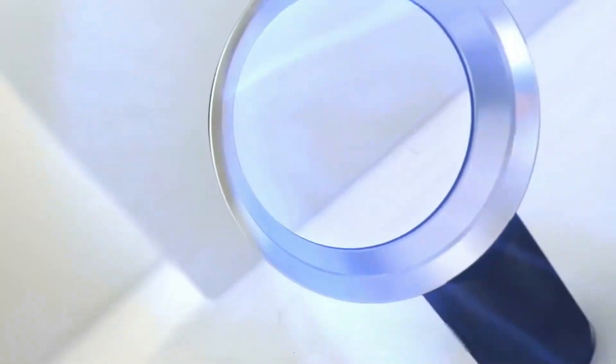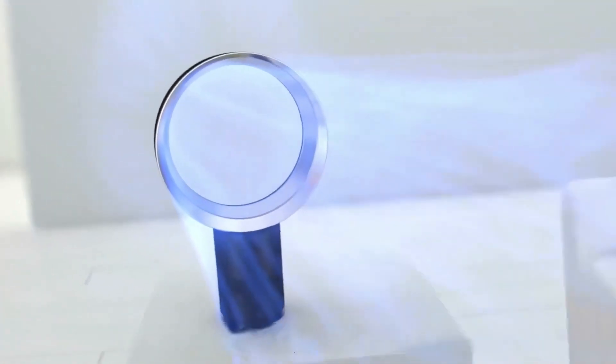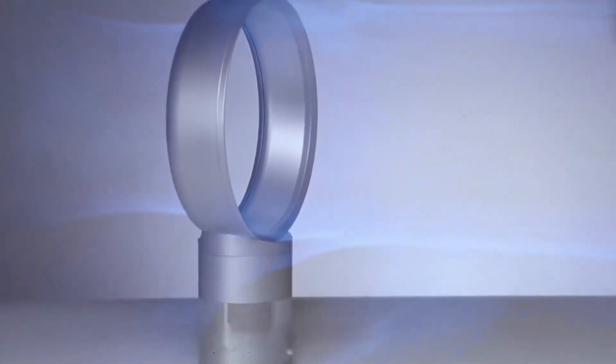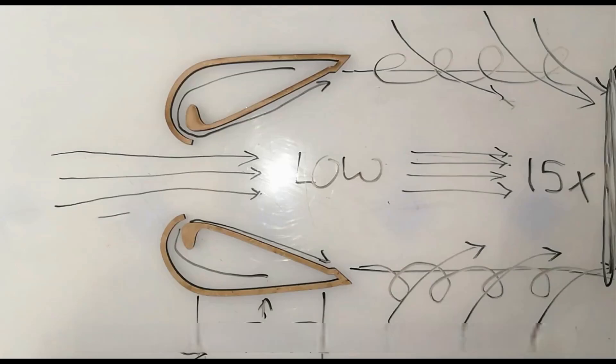The round exhaust port is also a good idea. From the cross section, it looks like the wing of an airplane, using the principle of Bernoulli's law. It is equivalent to amplifying the air and then accelerating and blowing it out.